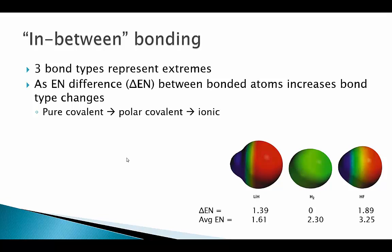Now we need to talk about in-between bonding. It turns out that these three bond types really represent extremes, and most chemical compounds exhibit bonding that's kind of in between these three extremes. We can talk about those extremes by looking at electronegativity. Moving from pure covalent, where there's no electronegativity difference, to polar covalent where there is some charge distribution, to ionic if you have a really big electronegativity difference.